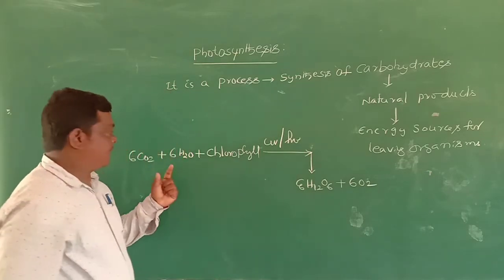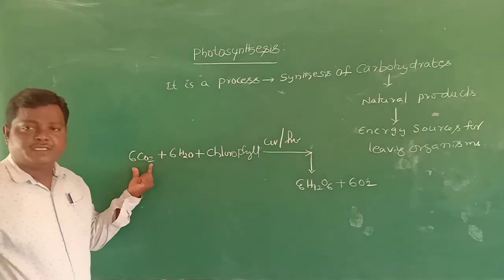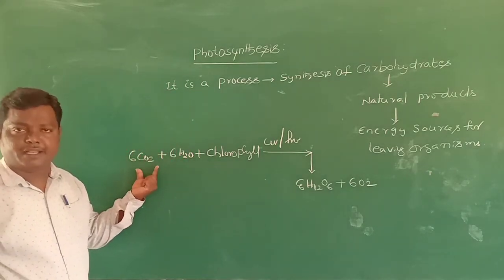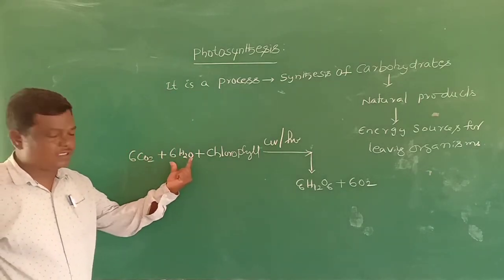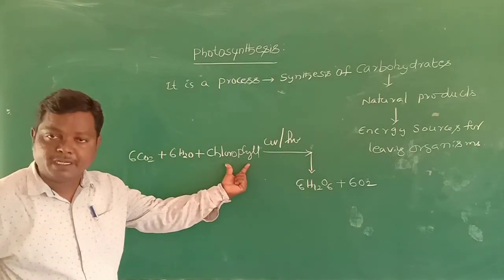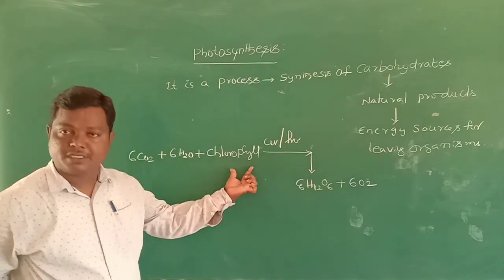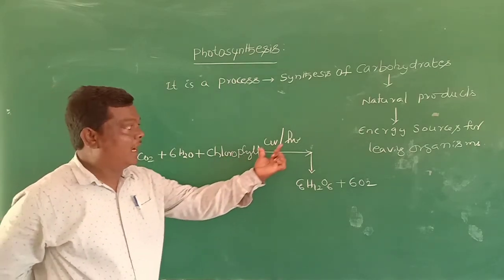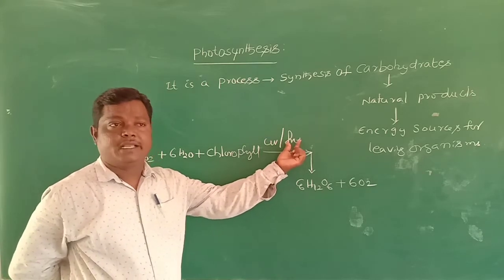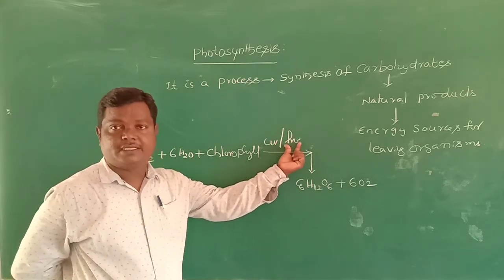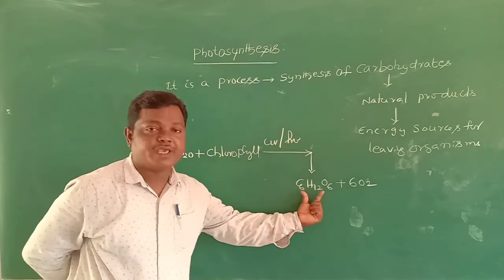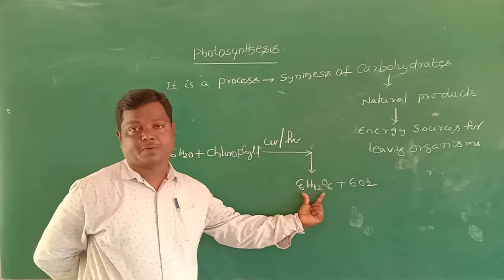CO₂ is available in the region, and water is also a water source. Chlorophyll is a green coloured pigment available in green plants, and UV light is also from natural sources. So we are getting natural products.